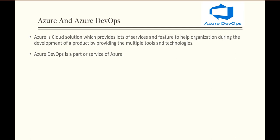Azure is a cloud solution that provides many services and features, used to help organizations during product development by providing multiple tools and technologies. For every step — planning, implementation, testing, and deployment — there is a dedicated tool. Azure DevOps is basically a part of, or a service within, Azure. That is the key difference between Azure and Azure DevOps.